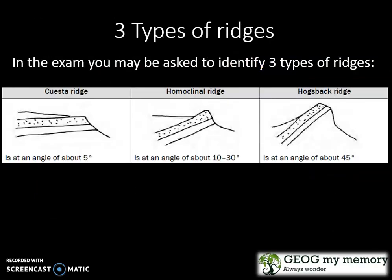In the exam, you may be asked to identify three types of ridges. The cuesta ridge is at an angle of about 5 degrees. The homoclinal ridge is at an angle of about 10 to 30 degrees. And the hogsback ridge is at an angle of about 45 degrees.